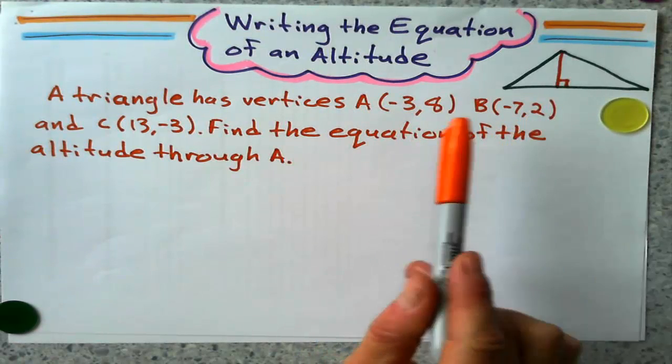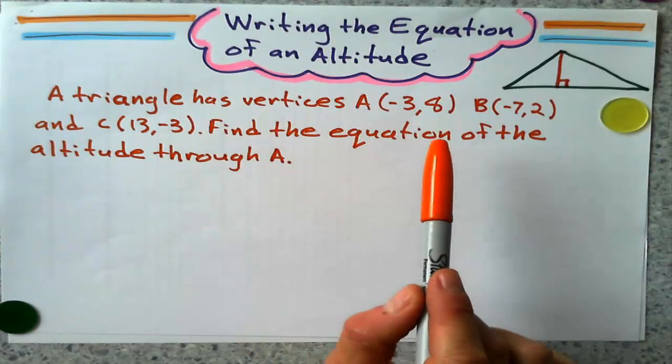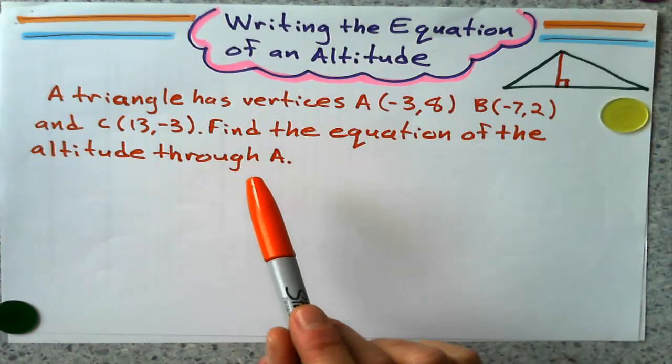A negative 3, 8, B negative 7, 2, and C 13, negative 3. Find the equation of the altitude through A.